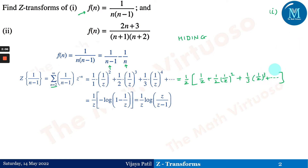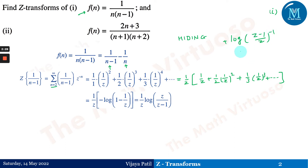From the standard series, this expression inside the bracket is nothing but -log(1 - 1/z). Taking the minus sign inside gives log(z/(z-1)). Therefore, the Z-transform of 1/(n-1) is (1/z)·log(z/(z-1)).